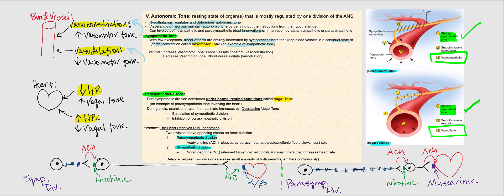Let's now look at parasympathetic tone. The example we're going to look at is the heart, which is innervated by both the sympathetic and parasympathetic divisions — in other words, dual innervation. When the heart is at rest, the parasympathetic division will predominate, dominating over the heart. That is referred to as vagal tone, which is an example of parasympathetic tone involving the heart. If we have an increase in vagal tone, we are going to have a decrease in heart rate.